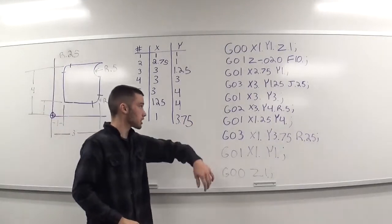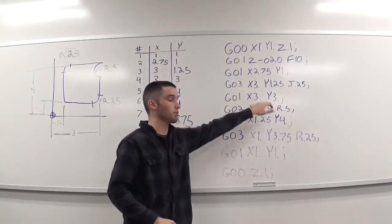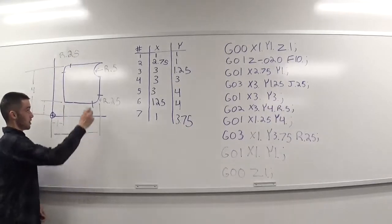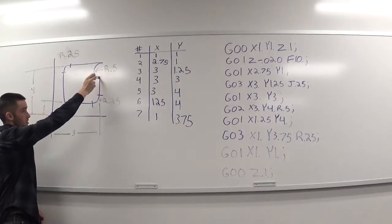So, kicking us out of G03 is the G01, which is bringing us up to x of 3, y of 3. And we're already at x of 3, so we're not moving anywhere there. But we're moving up to a y of 3, which is this start point.